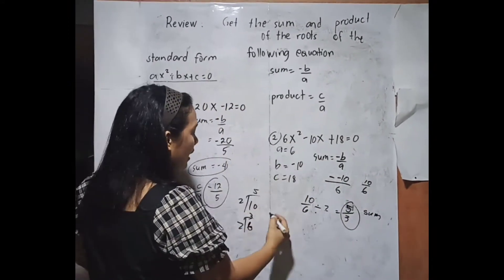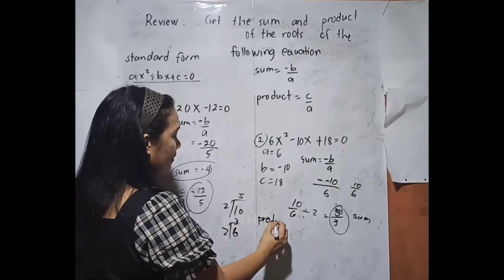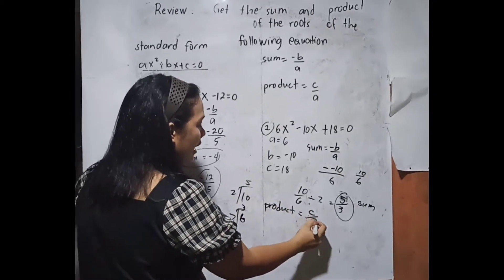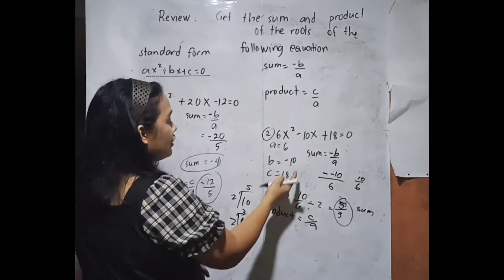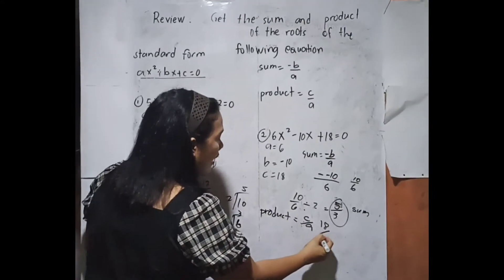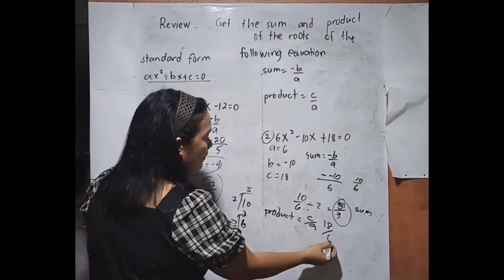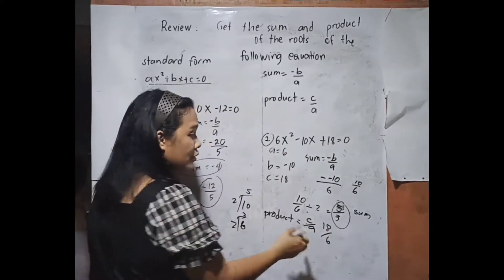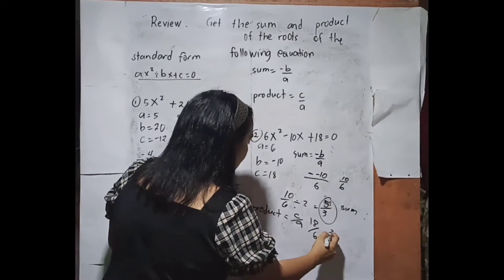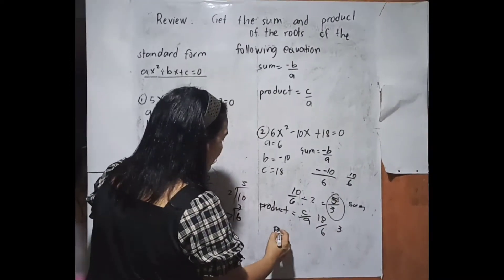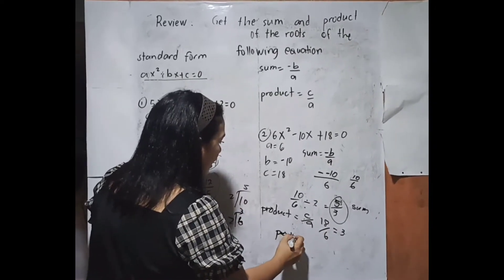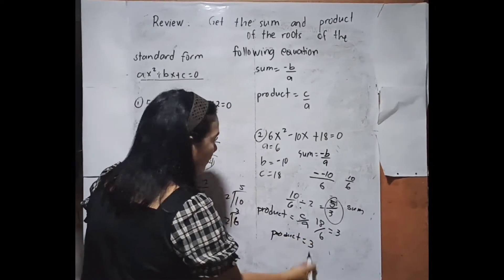Next, our product, again, is c over a. Yung c natin ay 18 and ang ating a ay 6. Pag i-divide mo yan, that is 3. Our product is 3.